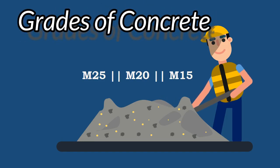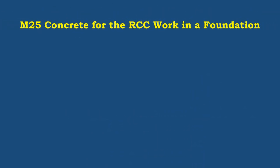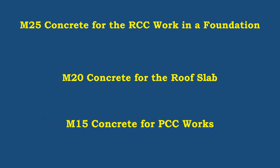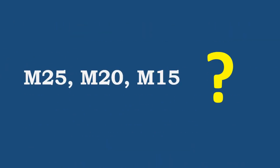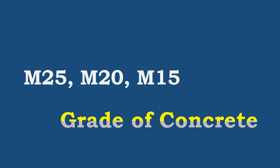As an engineer, you could have come across mentions such as: use M25 concrete for RCC work in a foundation, M20 concrete for the roof slab, M15 concrete for PCC works, etc. What do these M25, M20, M15 really represent? These names represent a grade of concrete. In this video, you are going to see about grades of concrete.